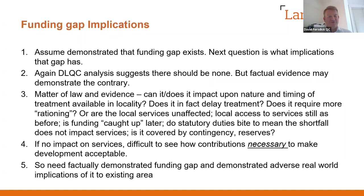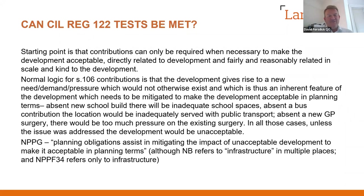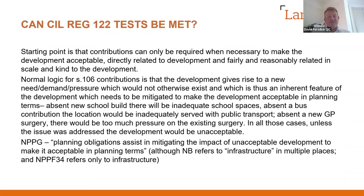One is still then left with: can the SIL tests be met? The normal logic for Section 106 contributions is that the development gives rise to a new need or demand or pressure which wouldn't otherwise exist, and which is thus an inherent feature of the development needing to be mitigated in order to make the development acceptable in planning terms. For example, absent a new school build there will be inadequate school places; absent a bus contribution the location would be inadequately served by public transport; absent a new GP surgery there'd be too much pressure on the existing surgery. In all those cases, unless the issue is addressed, the development would be unacceptable.